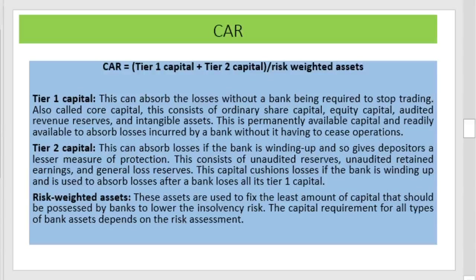Tier 1 capital is permanently available and readily able to absorb losses. Tier 2 capital can absorb losses if a bank is winding up, providing depositors a lesser degree of protection. It consists of unaudited reserves, unaudited retained earnings, and general allowance reserves. Risk-weighted assets are used to fix the minimum amount of capital a bank should hold to lower its risk.